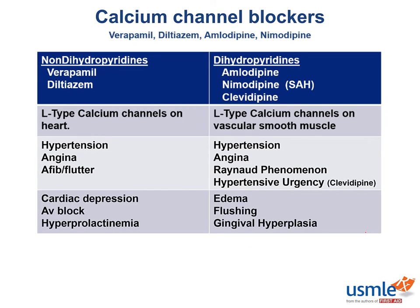The toxicities associated with these drugs are directly related to their mechanisms. The cardiac depression and AV block caused by non-dihydropyridines should be obvious because we are directly blocking the calcium channels responsible for the intrinsic depolarization rate of the cells that control heart rate. Peripheral edema, flushing, and dizziness are all related to vasodilation. If you dilate your vessels, you can increase fluid shifting across the vessel wall into the interstitium, leading to edema.